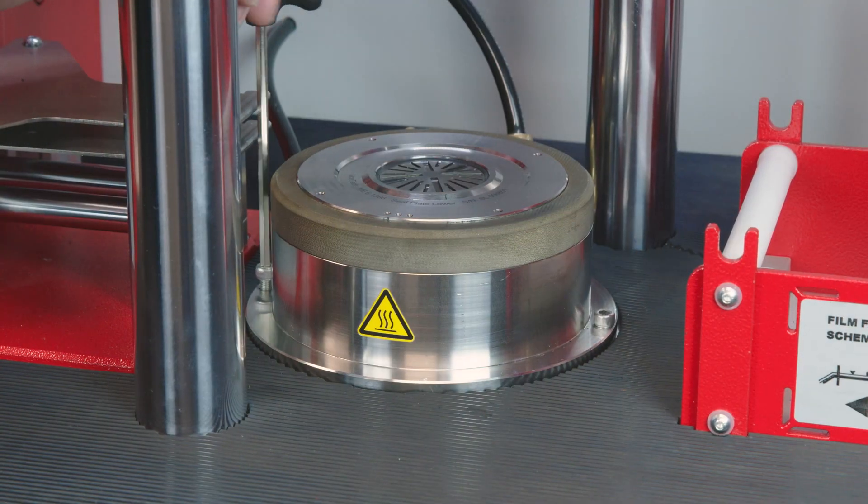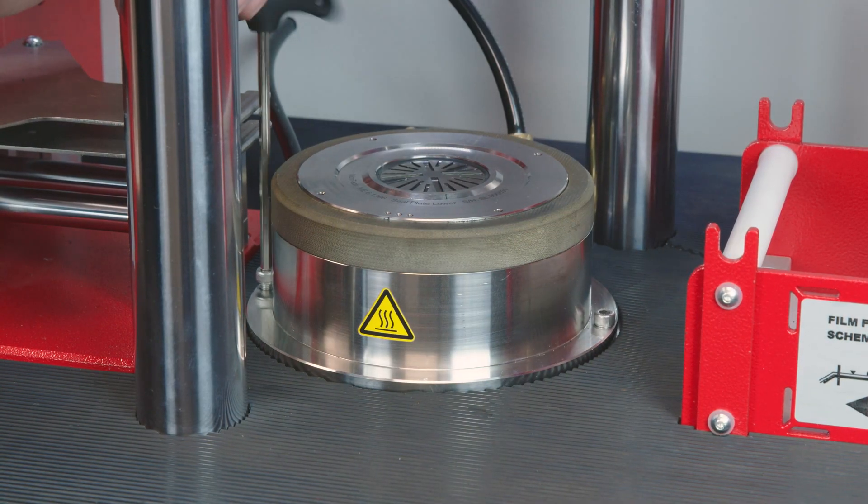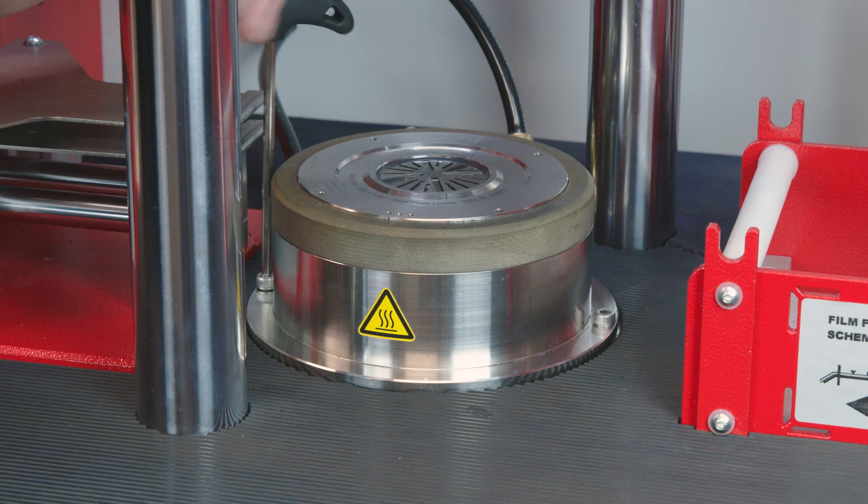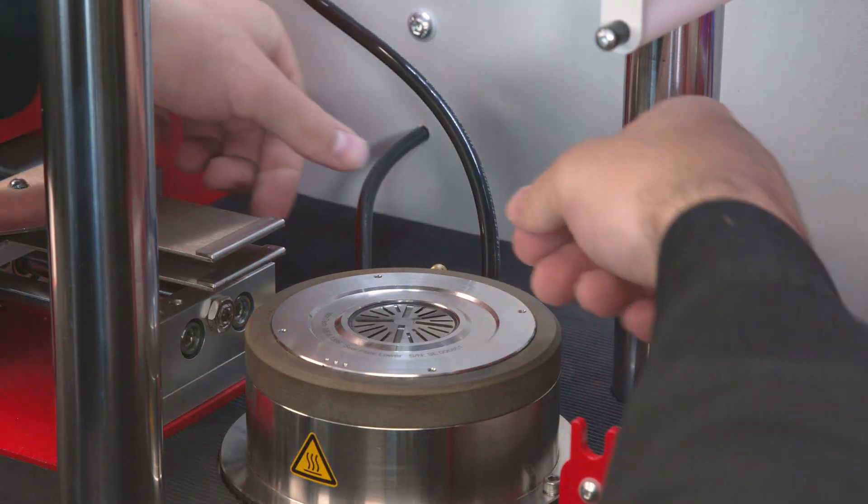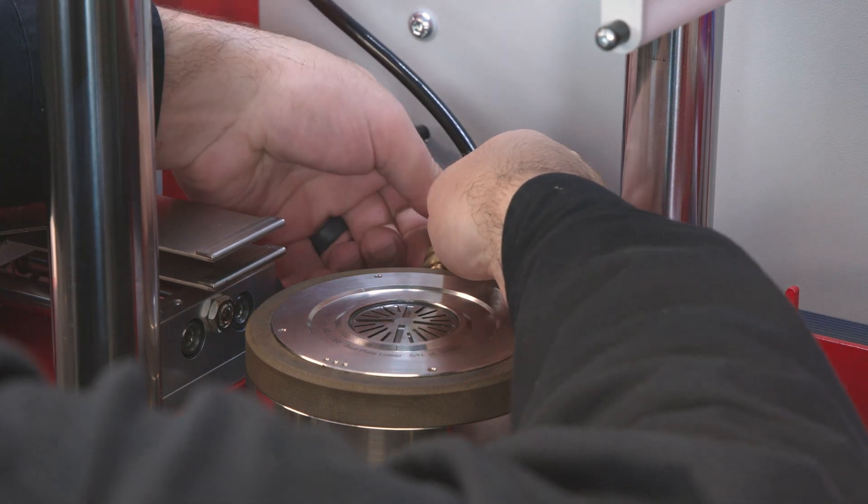With the platen secured with the new seal around the die, align the bolt holes and secure the platen once again using the platen bolt wrench. Once secure, reconnect the air line. Repeat for the upper platen.